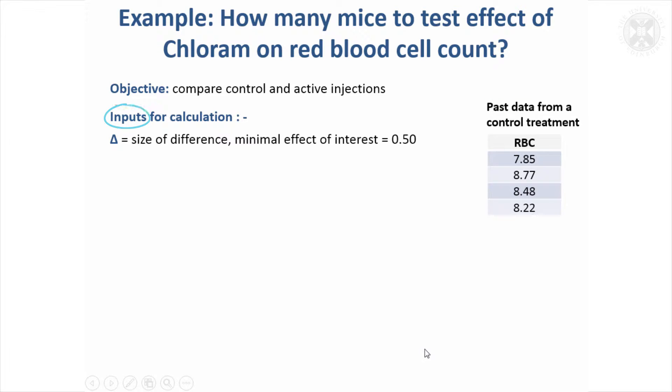So our inputs are, first of all we need to say what's the size of the difference we want to be able to detect. Here we'll say that if there was a 0.5 difference in red blood cell count we would be interested in it between the groups. That's our size of the difference we want to detect.